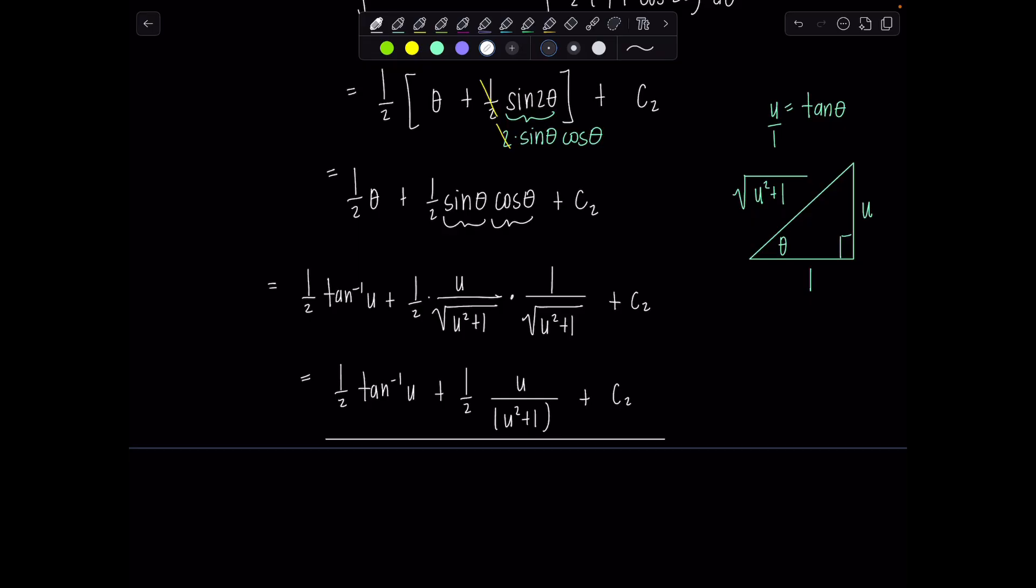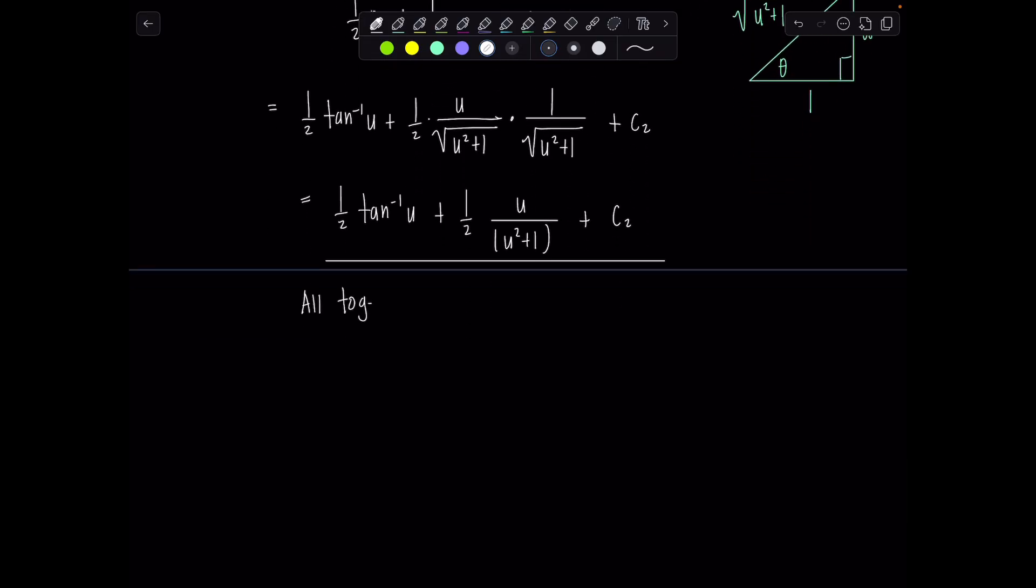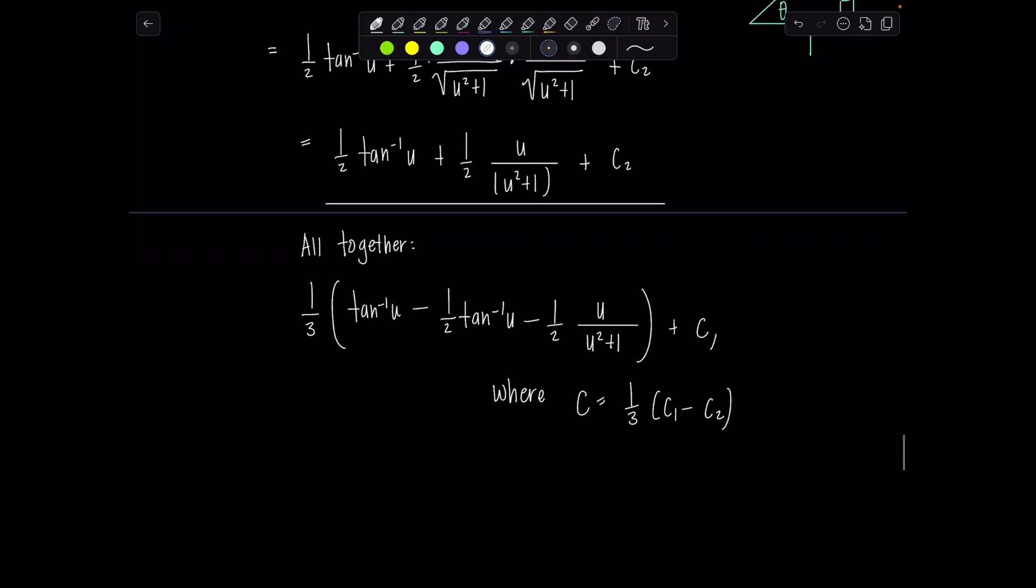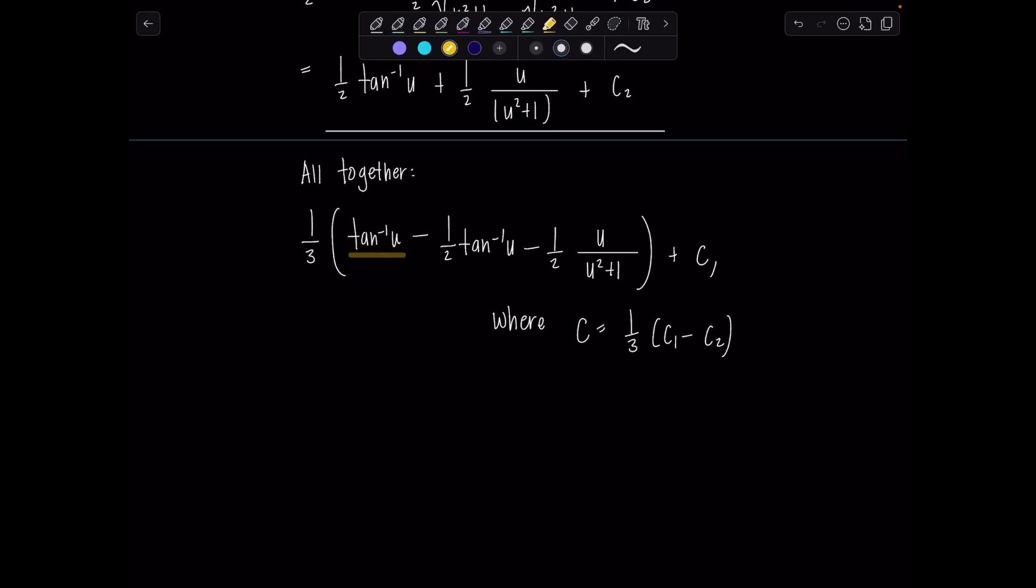Okay. So we finished up the second integral. Are you ready to put it all together? Yes, I am. This is exciting. Okay. So the first integral was tan inverse of u. And then we had plus c1. Don't worry about it. And then we had minus all of this stuff. So minus one half tan inverse of u minus one half u over u squared plus one. And then all of this was times a one third. And then now I'm going to put plus c and we have to tell the people who is the c. Well, c is one third times c1 minus c2. Okay. And then before you get too excited, we can clean up quite a bit more. Notice we've got tan inverse of u minus one half tan inverse of u. So those can be combined. So we've got one third times one half tan inverse of u minus one half times u over u squared plus one plus c.